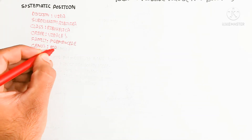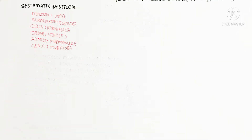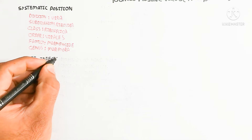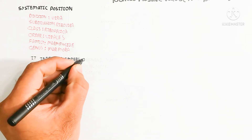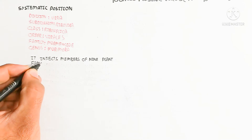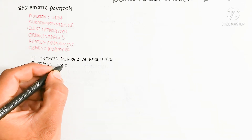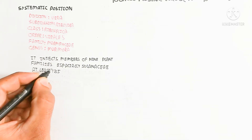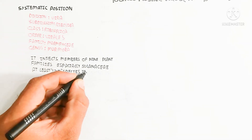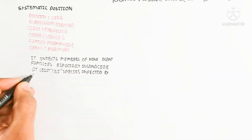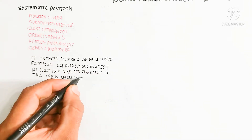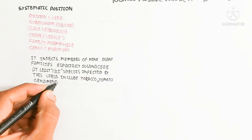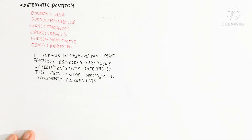TMV infects members of nine plant families, especially Solanaceae, which includes tomato and potato. At least 125 species are infected by this virus, including tobacco, tomato, ornamental flowers, and other plants. Let's begin to understand from the introduction through to the disease-causing process and life cycle, which we will discuss in this video.